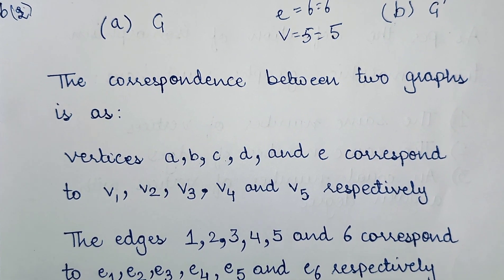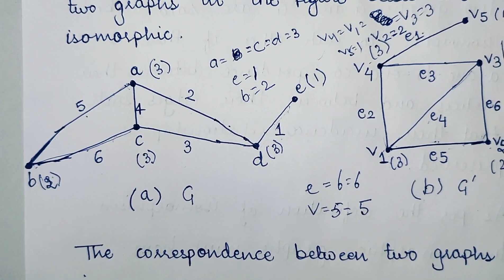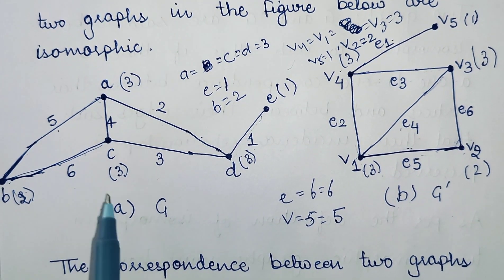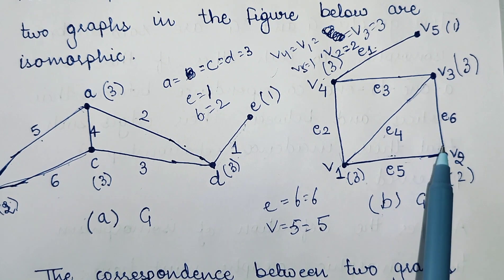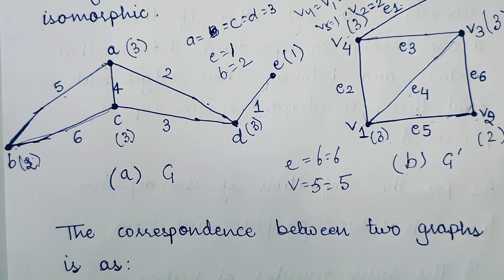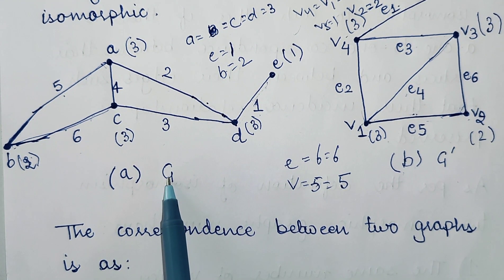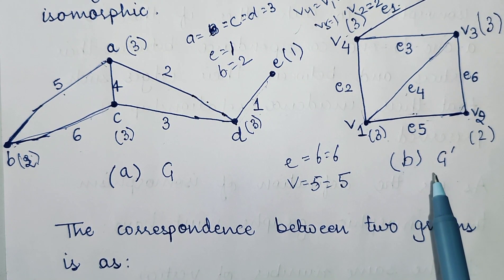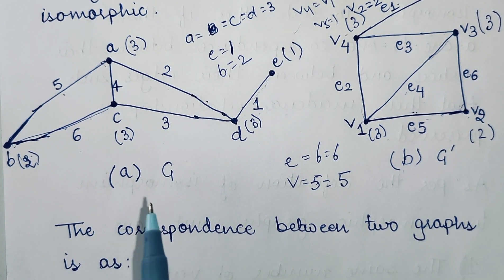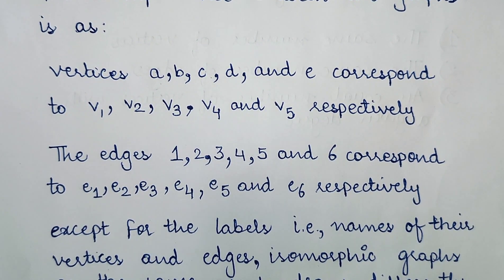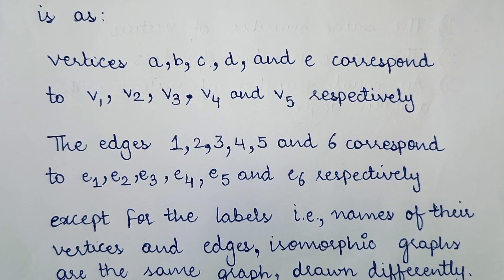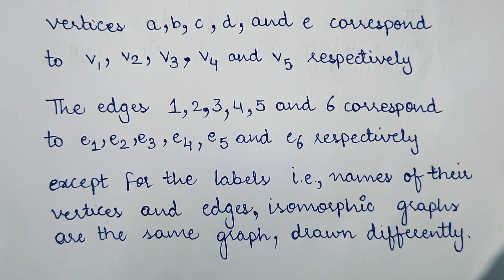The edges 1, 2, 3, 4, 5, and 6 in graph A correspond to the edges E1, E2, E3, E4, E5, and E6 in graph B respectively. So there is a one-to-one correspondence between the graphs of figure A and figure B. Except for the labels — the names of the vertices and edges — everything else, meaning the number of vertices, number of edges, and the incidence between vertices and edges, is the same. So these are isomorphic graphs, which are exactly the same graphs drawn differently.